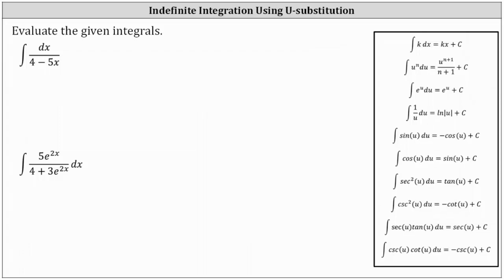This lesson will show two examples on how to evaluate indefinite integrals using the method of u-substitution. Looking at the first integral, it might be helpful to rewrite this as the integral of 1 divided by the quantity 4 minus 5x dx. In this form, we can see we have a rational function which fits the form of the integration formula.